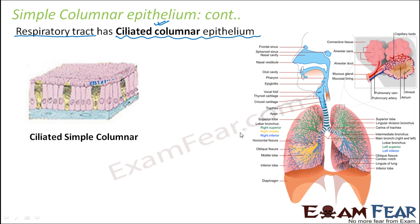In the respiratory tract, mucus — a very slippery fluid-like substance — is secreted by some specialized glands. It protects the lungs by trapping foreign particles that enter during breathing. The cilia move and sweep the mucus away from the nostrils and towards the back of the throat. This prevents the mucus from running down through the nose and reaching the respiratory tract, thus preventing foreign particles from entering the respiratory tract and causing damage. This is ciliated columnar epithelium, and it is still a simple epithelium because it has only one layer of cells.